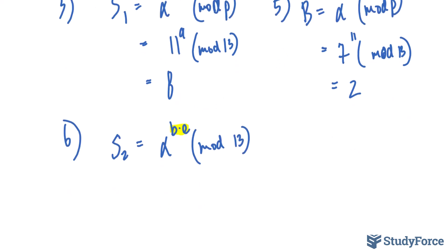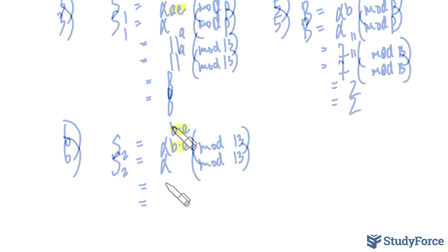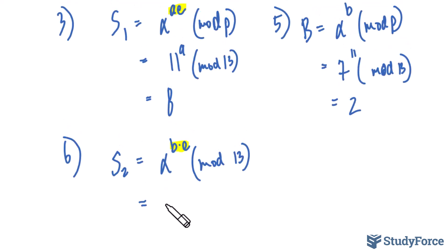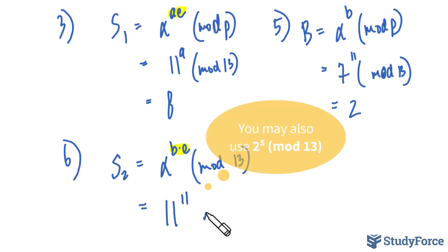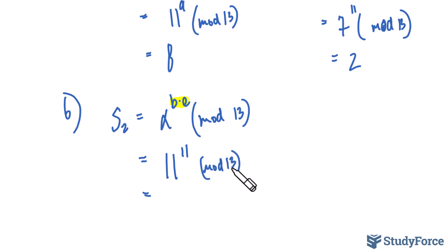Now much the same way we calculated the previous secret, we'll take Eve's value of E, capital E that is, and raise it to the exponent 11, which was Bob's private value. And don't forget, we're finding that mod 13. So the remainder of this value divided by 13, and it happens to be a remainder of 6. Now just to reiterate, both Bob and Eve share this secret. But Bob thinks he shares this secret with Alice.